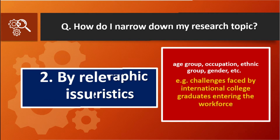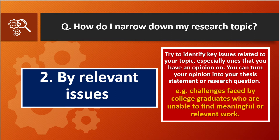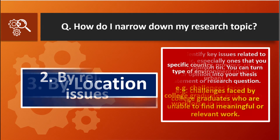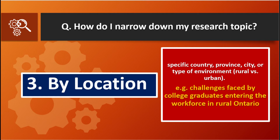Secondly, you can narrow down your research topic by relevant issues. Try to identify key issues related to your topic, especially ones that you have an opinion on. You can turn your opinion into your thesis statement or research question. For example: challenges faced by college graduates who are unable to find meaningful or relevant work. The issue here is being unable to find meaningful or relevant work.